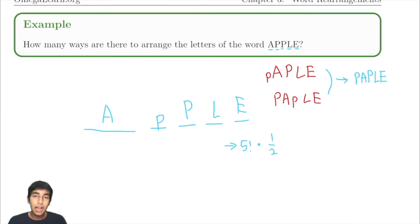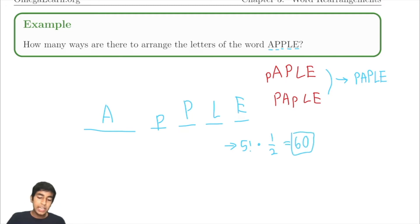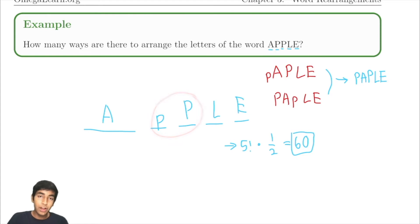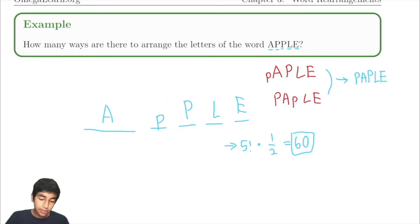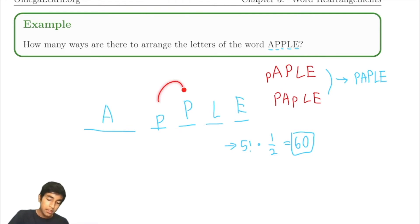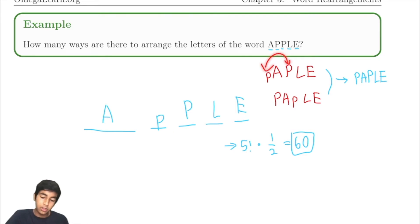So five factorial times one half, which is 60. Another way of thinking about it: amongst all five factorial ways to arrange the letters, there are two factorial ways to arrange the P's. So for each valid arrangement, there are two factorial ways to arrange the P's, so we divide by two factorial — which is just two — because swapping the P's won't create a new word.